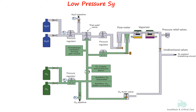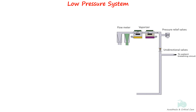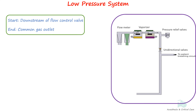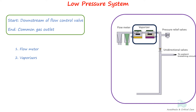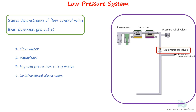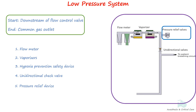The low-pressure system is located downstream of the flow control valves. The pressure in this system is slightly above atmospheric pressure and much variable. The system contains flow meters, vaporizers and their mounting devices, hypoxia prevention safety devices that automatically regulate the flow of oxygen and nitrous oxide, unidirectional valves, pressure relief devices, and common gas outlet.